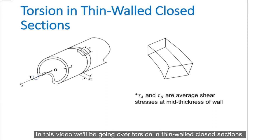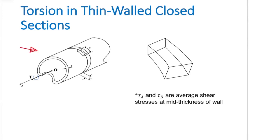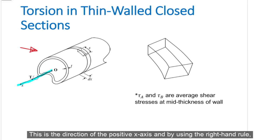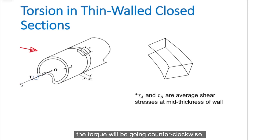In this video, we'll be going over torsion in thin-walled closed sections. Let's consider a hollow cylindrical member of a non-circular cross-section. This is the direction of the positive x-axis and by using the right-hand rule, the torque will be going counterclockwise.